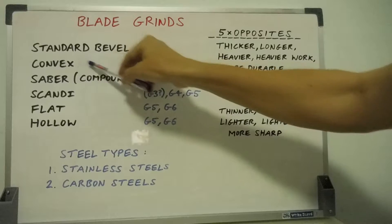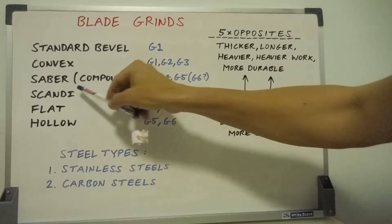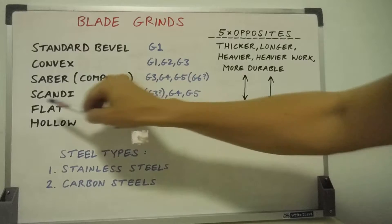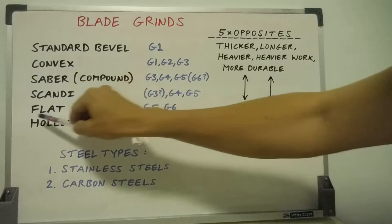And a standard bevel, convex, a saber grind which is also a compound grind, a scandi grind, flat and hollow.